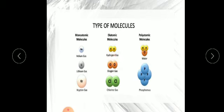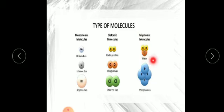Poly means many. The water compound and the phosphorus compound have polyatomic atomicity. Water has 2 hydrogen and 1 oxygen, so 2 plus 1 equals 3 — water has atomicity 3. Phosphorus has 4 atoms, so its atomicity is tetra-atomic, or we can say polyatomic. We can write tri, tetra, or poly for molecules with more than 2 atoms. So types of molecules: they can be mono, di, or poly.